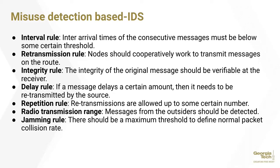There is also classification based on misuse detection. The interval rule: arrival times of consecutive messages must be below a certain threshold. Retransmission rule: nodes should work cooperatively to retransmit messages on the route. Integrity rule: integrity of the original message should be verifiable at the receiver. Delay rule: if a message delays a certain amount, it needs to be retransmitted by the source. Repetition rule: retransmissions are allowed up to a certain number. Radio transmission range: messages from outsiders should be detected. And jamming rule: there should be a maximum threshold to define normal packet collision rates.